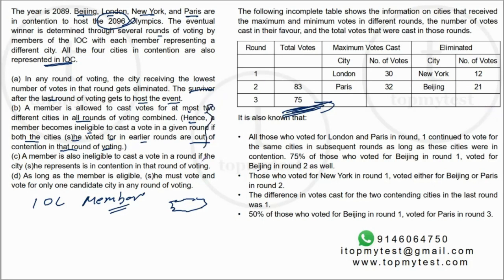However, a member becomes ineligible to cast a vote if both the cities he voted for in earlier rounds are out of contention. For example, if a member voted for New York in round one and Beijing in round two, he cannot vote in round three because both those cities are eliminated. Additionally, a member is ineligible if the city he or she represents is still in contention.